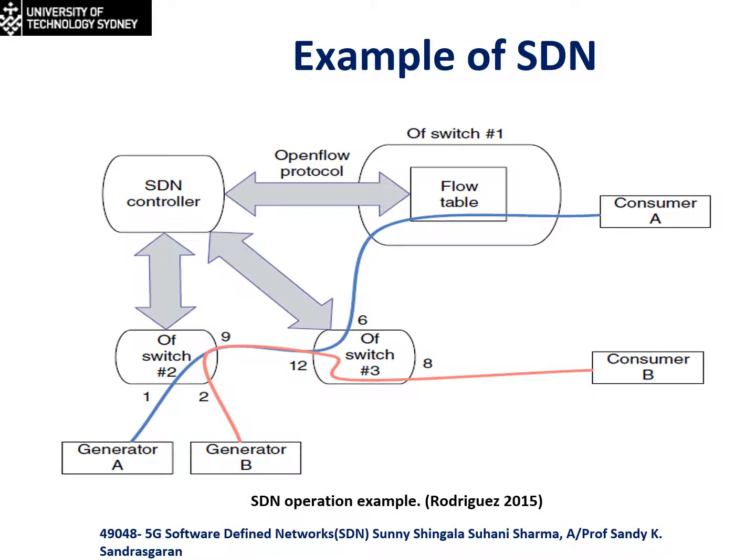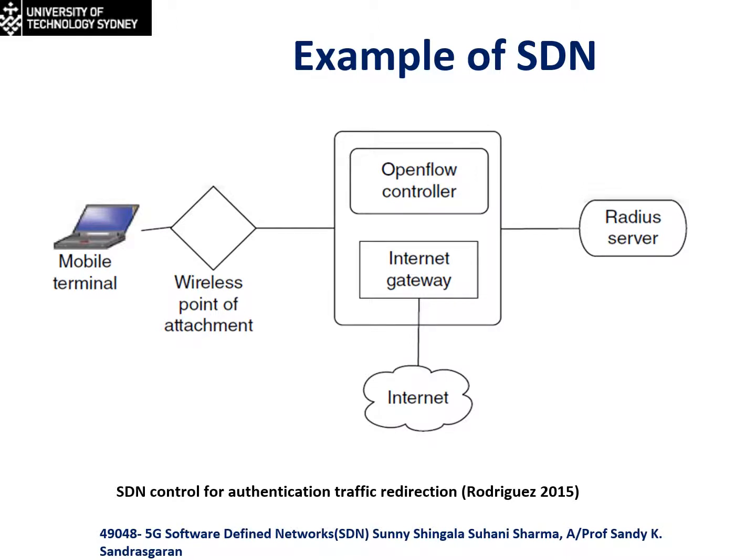In this example, an SDN controller is in charge of three operating switches. Generator A generates production-grade information destined for consumer A, whereas Generator B is used for testing a new protocol. The controller is configured so that upon detection of traffic produced by Generator B, the information is forwarded to consumer B. When traffic from Generator B reaches Switch 1, the controller is contacted via OpenFlow protocol and determines that the final destination should be consumer B. OpenFlow protocol is also found in various business items, such as validating messages to permit the controller to handle 802.1x authentication in a user-specific way.